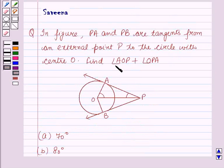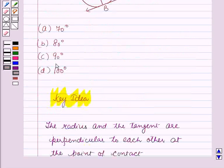Hence, the value of angle AOP plus angle OPA is 90 degrees. Therefore, the answer is option C, which is 90 degrees.